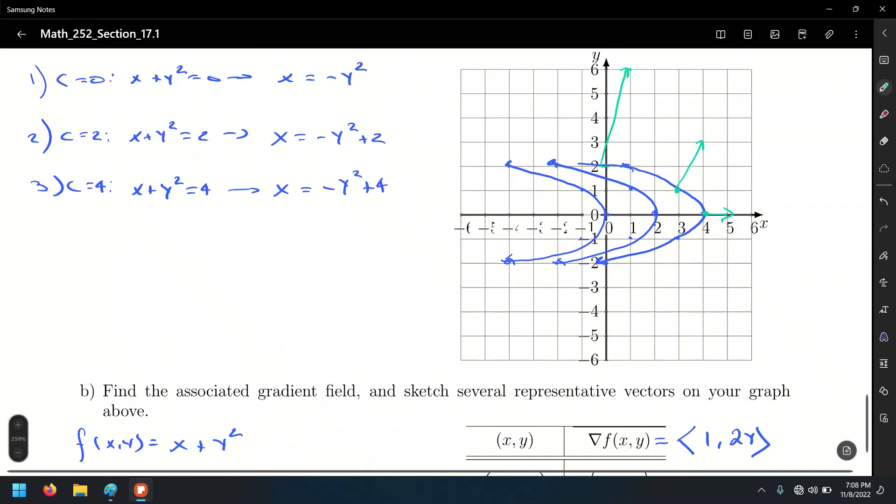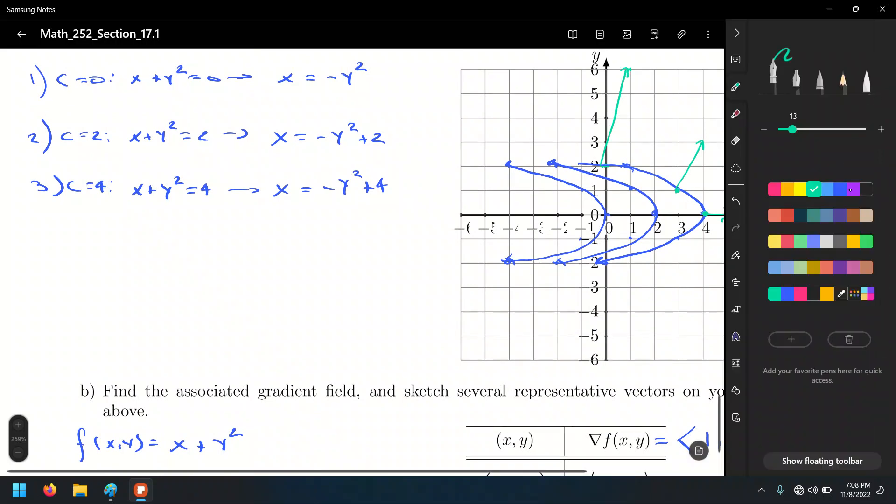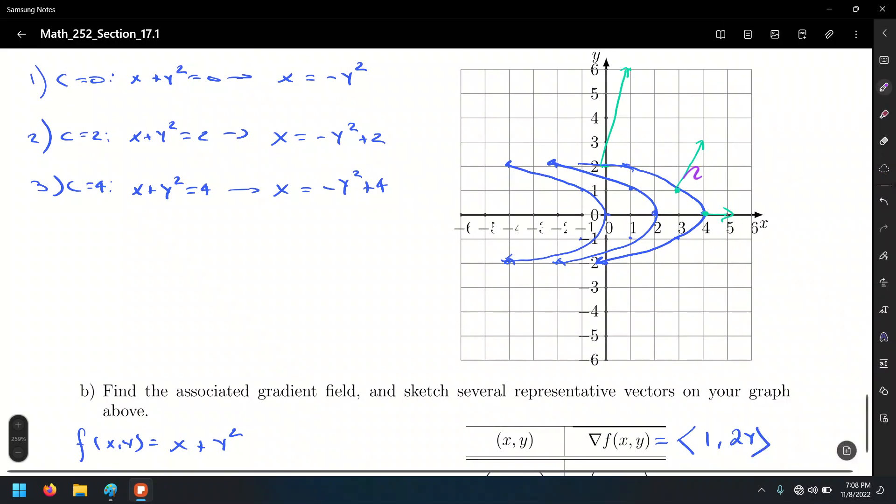Now, do you see these vectors and their relation with the level curves? Do they look orthogonal for you? So that's the idea of this exercise, to show that result. Show the definition that vectors in the gradient field are orthogonal to the level curves.